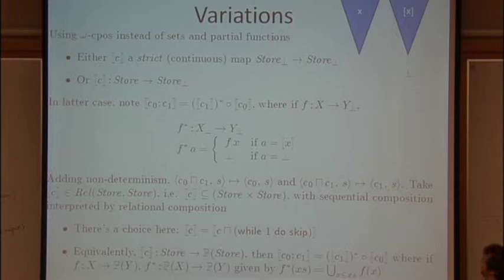So the way we get around that problem is we do this operation on the denotation of C1 to kind of push it back into this space. So C0 here is going to take us from stores to stores lifted and then C1 takes us from stores to stores lifted and we're going to extend that up to a function from stores lifted to stores lifted.